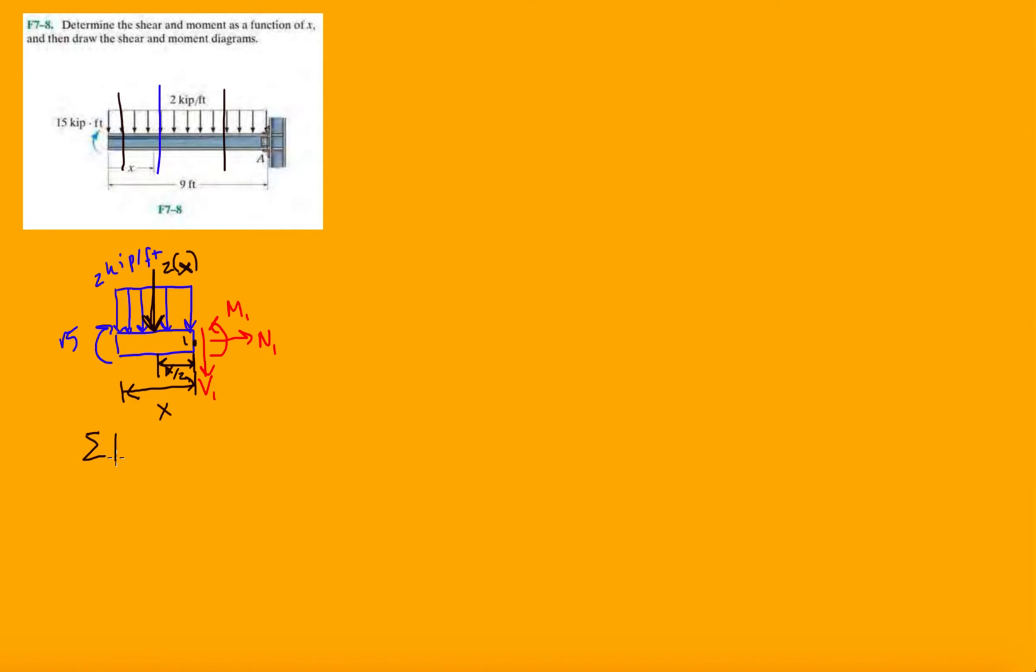So now let's just sum the forces in the Y direction. And we have minus 2X minus V1 equals 0. If we sum the forces in the X, N1 is going to be 0. And we have V1 is minus 2X.